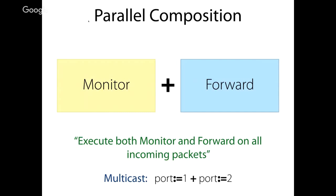The other composition operator is parallel composition, also called union. Intuitively, we create two copies of the incoming packet and give one to the monitoring policy and one to the forwarding policy. For example, if you want to occasionally send a packet to the controller for inspection while always forwarding normally, you write these as parallel independent policies. Parallel composition also supports multicast — creating two copies of a packet and sending one out of port 1 and one out of port 2.